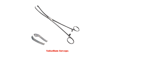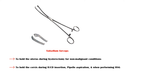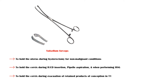Volcellum forceps are used to hold the uterus during hysterectomy for non-malignant conditions, to hold the cervix during intrauterine device insertion, pipel aspiration, and when performing a hysterosalpingogram. In addition, it is used to hold the cervix during evacuation of retained products of conception in the first trimester.